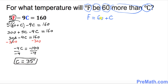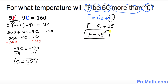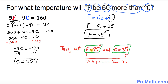Now we're going to find the value of F by simply plugging in C equal to 35. So that's going to be F equal to 60 plus 35, so F turns out to be 95 degrees. Thus, at F equal to 95 degrees and C equals 35 degrees, F is 60 more than degrees Celsius.